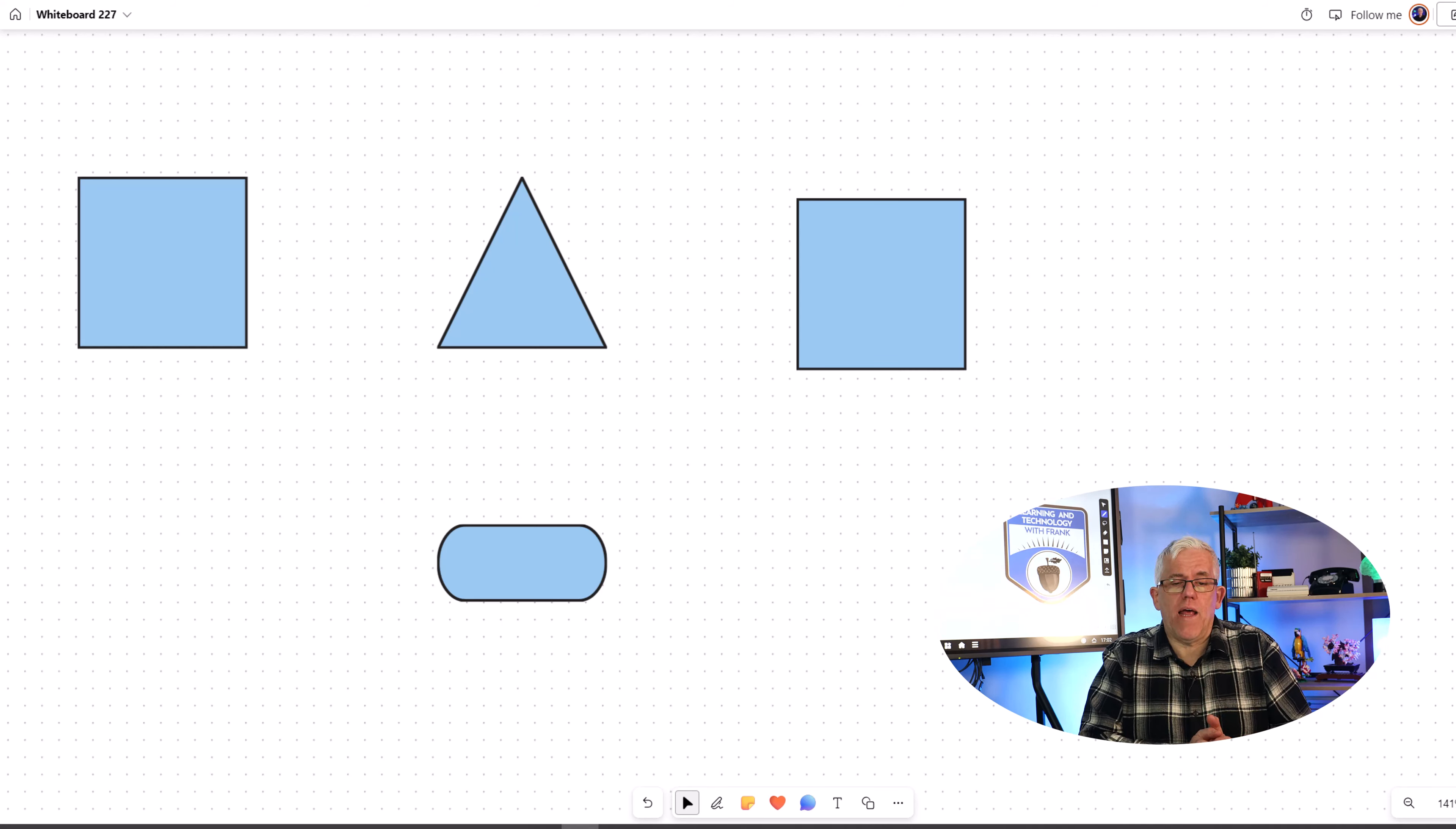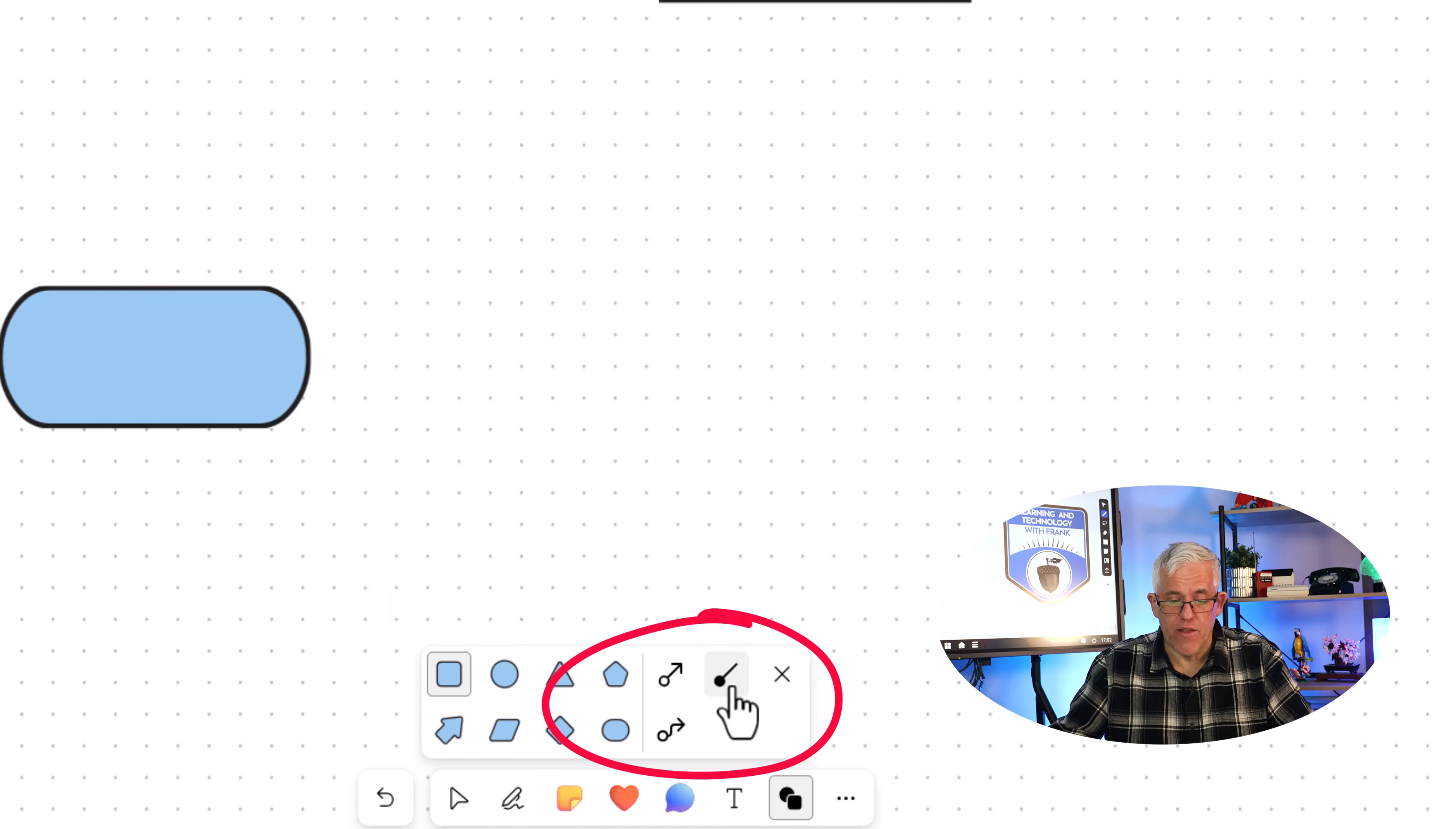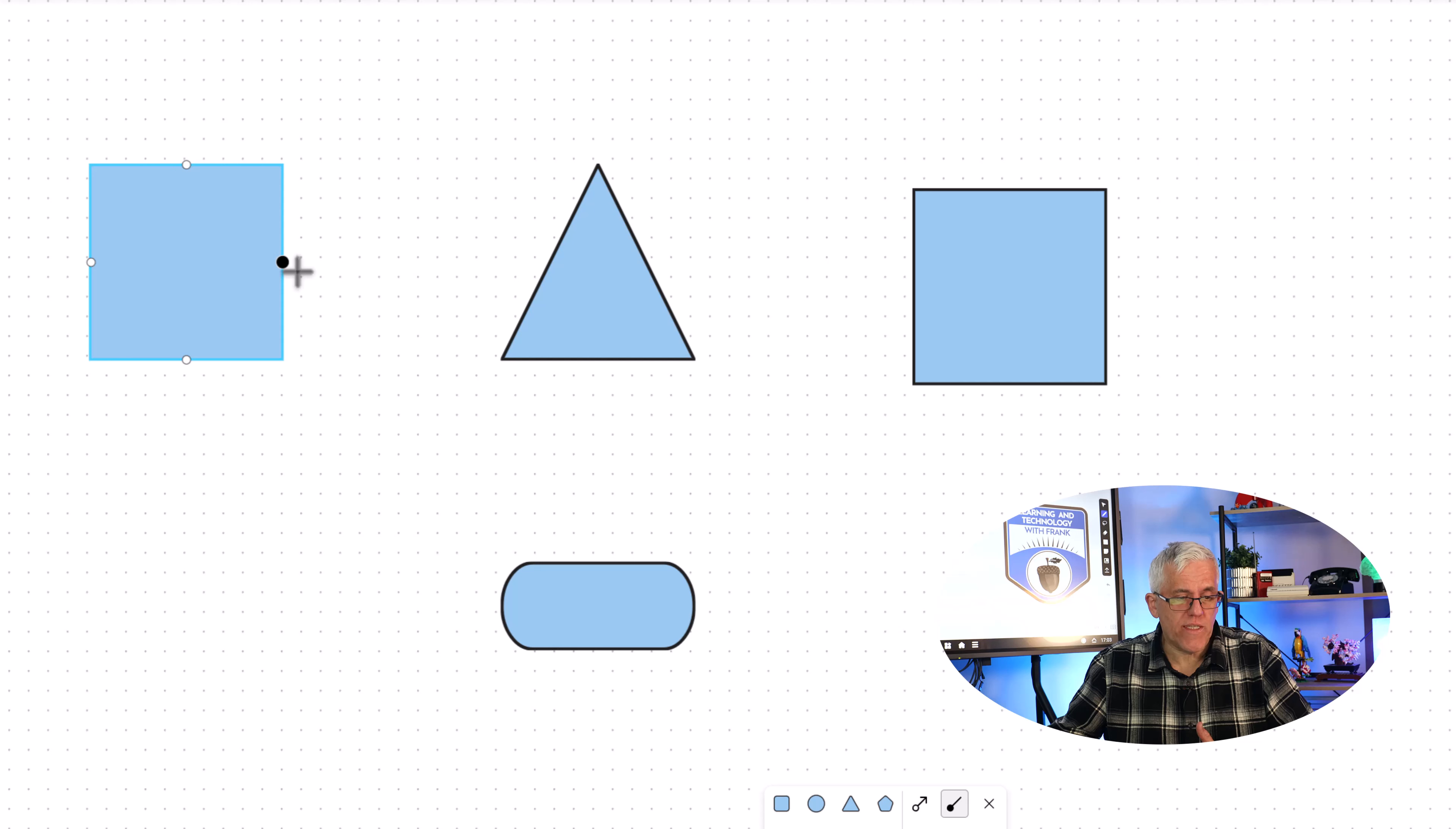The new feature allows me to go into my shapes menu here and connect these together. So if I grab a line here, I'm going to add a line. You'll notice that I get an anchor point on my shapes, and then I have multiple anchor points that I can connect that line to.